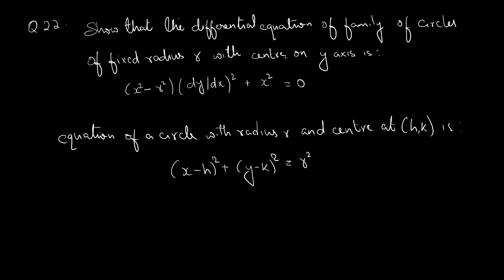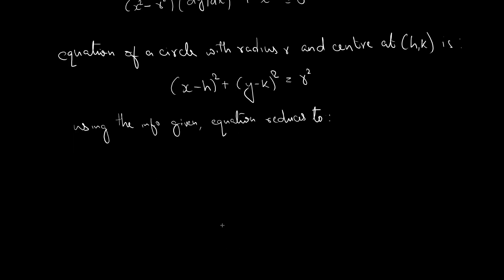It is given that the center lies on the y-axis, so the center's x-component, which is h, is 0. R is a fixed radius, so using the given information, the equation reduces to: x squared plus y minus k the whole square equal to R squared.